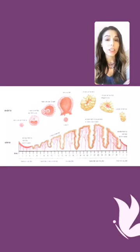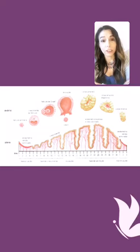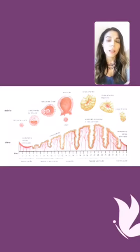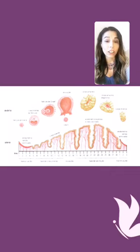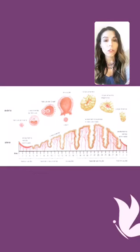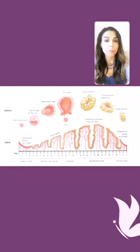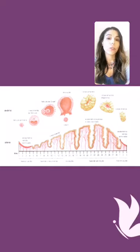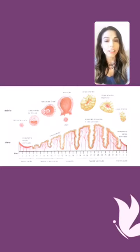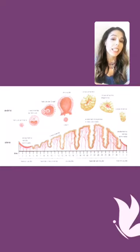If there is no fertilization, then that uterine lining will shed and that's what you call menstruation — your periods. So when we're talking about tracking your ovulation and trying to understand when your fertile days are, all the methods available are going to give you some sort of indication of where you are in this cycle at every point — whether ovulation is coming, happening, or has already passed.